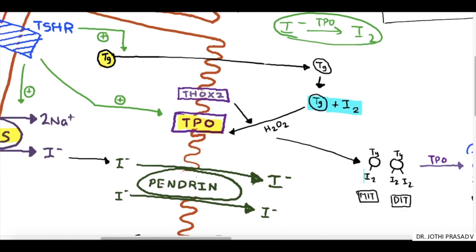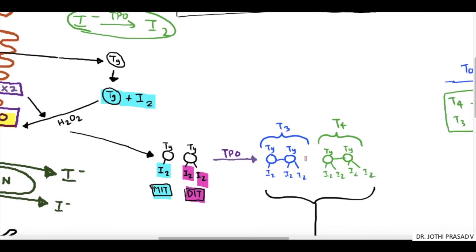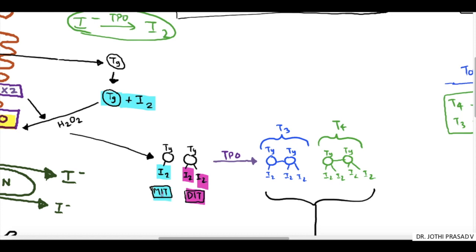When one iodine molecule combines with the tyrosine molecule, it is called MIT or mono iodothyrosine. When two iodine molecules combine with the tyrosine molecule, it is called DIT or diiodothyrosine. These molecules in presence of TPO, when combined together, that is one MIT and one DIT combined to form T3, and two DIT combined to form T4. These reactions are called coupling reaction.